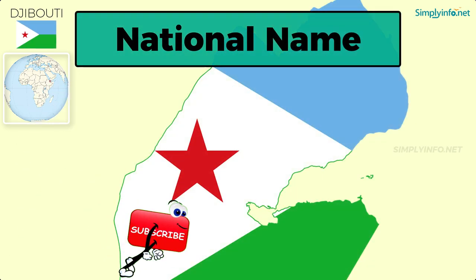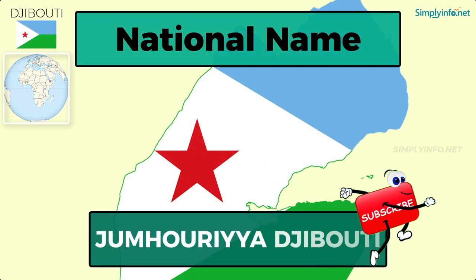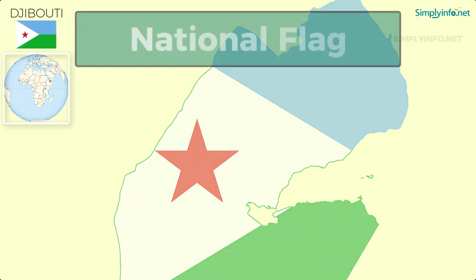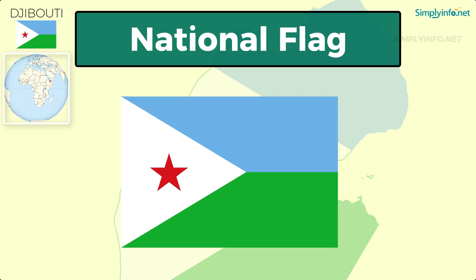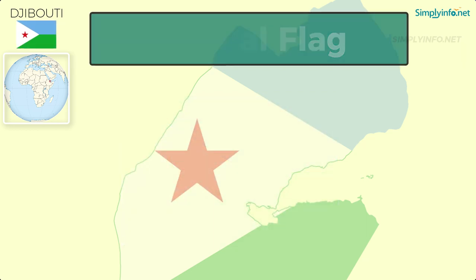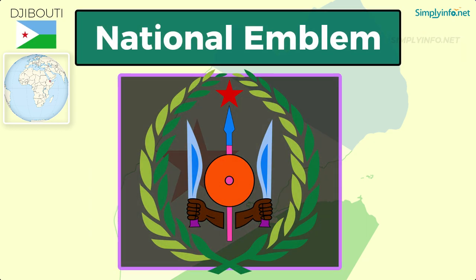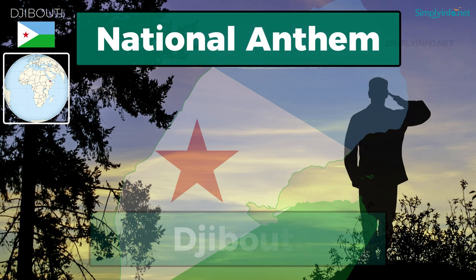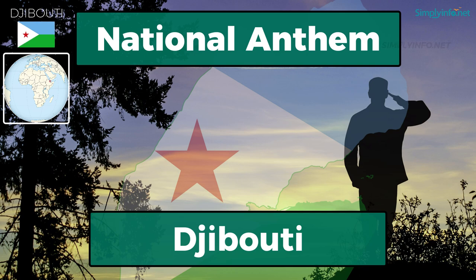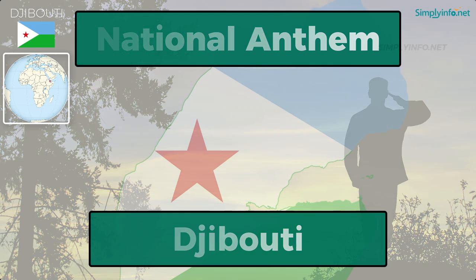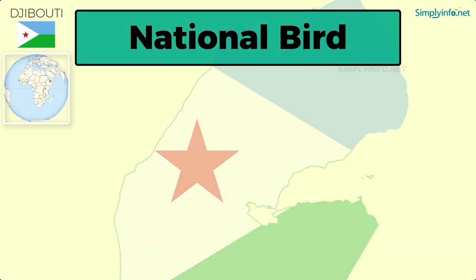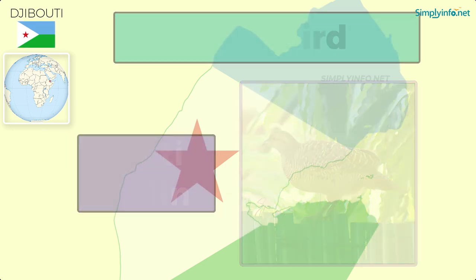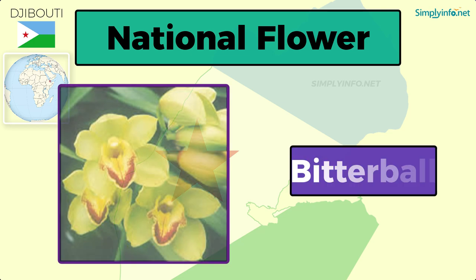National name: Jamuria Djibouti. National flag and national emblem. National anthem: Djibouti. National bird: Djibouti Francolin. National flower: Bittabal.